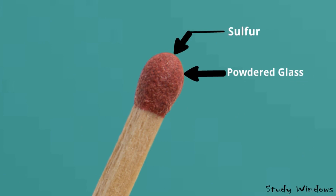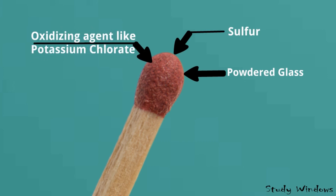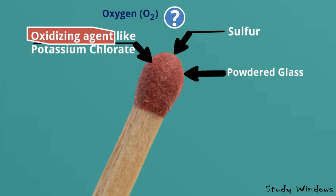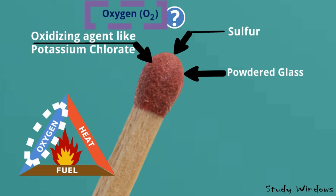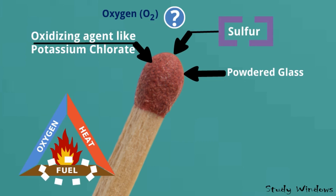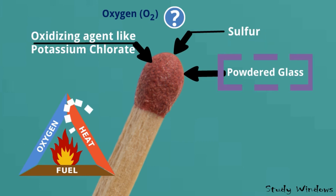This is the oxidizing agent, like potassium chlorate. An oxidizing agent means the agent which produces oxygen. Oxygen is required because for burning, oxygen, heat, and fuel — these three things are mandatory. If any one of these is not present, burning will not happen. So from the oxidizing agent we get oxygen, the sulfur is the fuel, and heat we get from the friction of the powdered glass. The sulfur, powder glass, and oxidizing agent are all stuck into the head of the match stick by some adhesive.